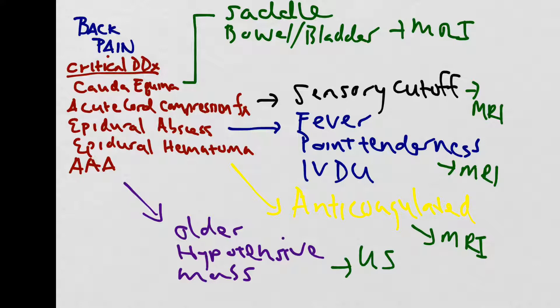So it's really important to remember your critical differential diagnosis when you're constructing your presentation for your attending. You want to mention whether or not your patient is having saddle anesthesia or a bowel or bladder incontinence or retention. You want to mention whether or not your patient had a sensory level cutoff on your physical exam. You'll want to mention whether or not your patient is having any weight loss, as this may represent malignancy and put your patient at increased risk of having a pathologic fracture with acute cord compression. You want to mention whether or not your patient is having fever, point tenderness on exam, and in this case, you want to ensure that you actually go into the social history and discuss whether or not the patient is an IV drug user. You want to review the patient's med list and report whether or not the patient is anticoagulated. You want to describe your abdominal exam and whether or not you actually felt a pulsatile mass.